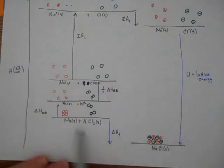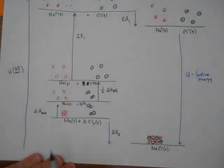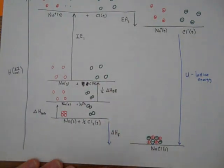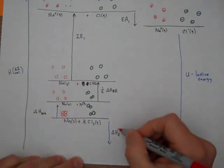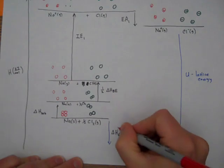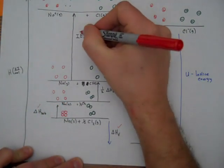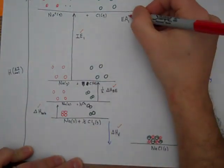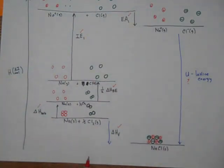Now you can see we have a pathway that lets us go from energy step to energy step all the way around this circle — that's our cycle, called the Born-Haber cycle. We know all of these energies: we can measure or look up ΔH of formation, ΔH of sublimation, bond energies for chlorine, ionization energies, and electron affinities. The one energy we don't know is the lattice energy.